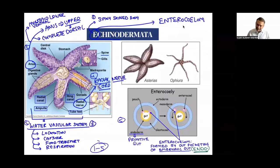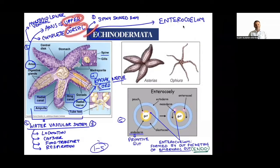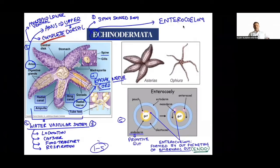Echinodermata have a complete digestive system — mouth on the ventral (lower) side and anus on the dorsal (upper) side. Third key feature is the water vascular system. This is different from the water canal system of Porifera. The water vascular system consists of closed vessels containing water, functioning mainly in locomotion, capturing prey, food transport, and respiration.